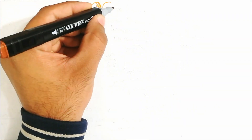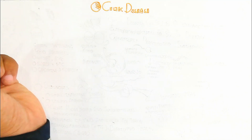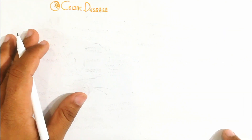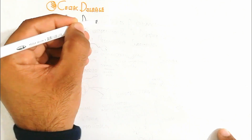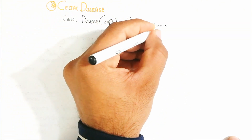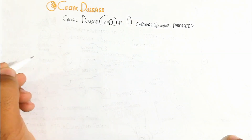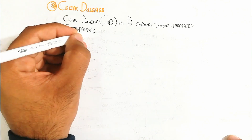In this video we will understand about celiac disease. Celiac disease is a gluten allergy — gluten is a protein present in wheat. For short, celiac disease or CED is a chronic immune-mediated enteropathy.